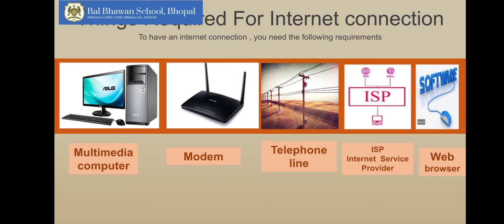These days people are also using mobile phones for internet because these digital smartphones are like small computers which can connect to the internet. You do not actually need a computer to connect to the internet — these days we are working with our mobile phones and many of you are using mobile phones only. Then we have web browser. A web browser is a software which helps you to access the internet. Examples of browsers include Google Chrome, Google, and Bing — all these are known as search engines or browsers.